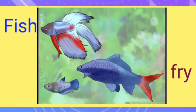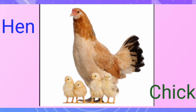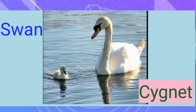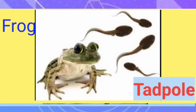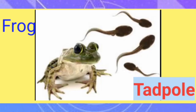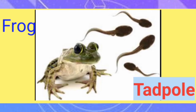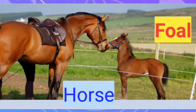The baby of fish is fry. The baby of hen is chick. The baby of swan is cygnet. The baby of frog is tadpole. The baby of horse is foal.